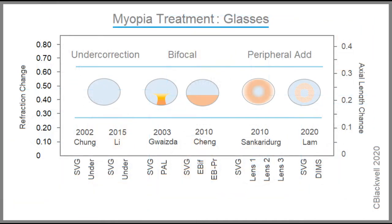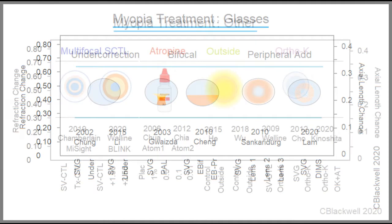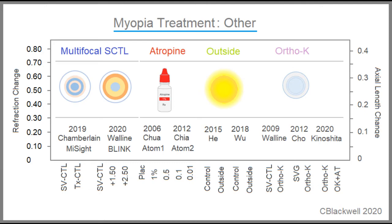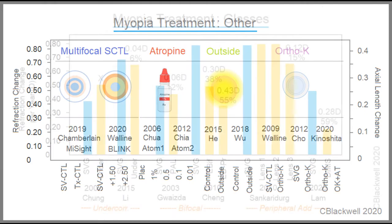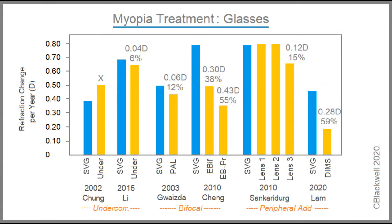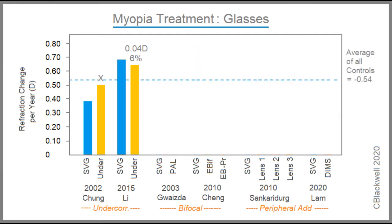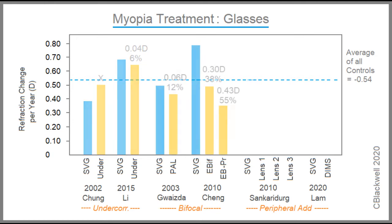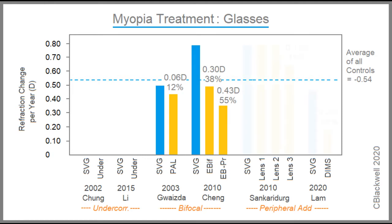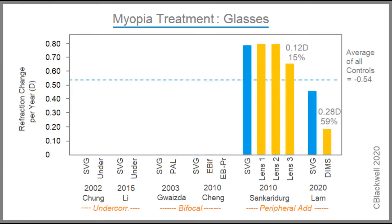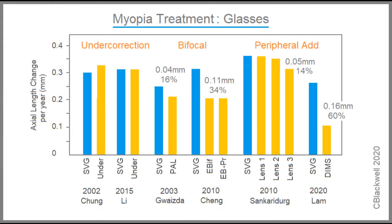Now we are ready to compare results across studies. We have divided this into two groups because they won't all fit on one page. Our first grouping includes the various glasses options; the second is non-glasses results: contacts, atropine, sunlight, and ortho-K. We recast the result of each study in bar graphs for this comparison. The blue bar on the left of each study is its control group. At the top of each bar is the refractive reduction per year, both the absolute number and percentage. In terms of refractive change, undercorrection was not successful. Results for bifocals depended on the type, as did results with peripheral add lenses. The results were the same when measured by axial length change per year.